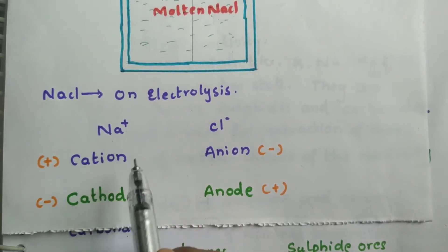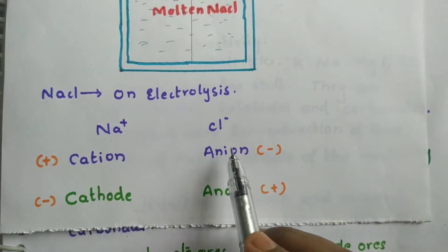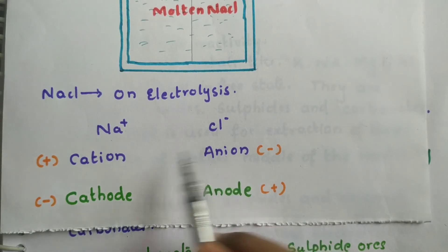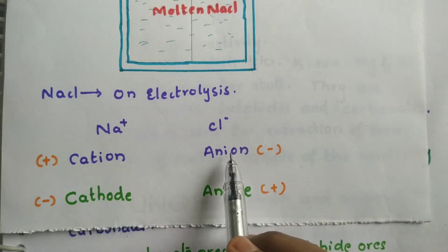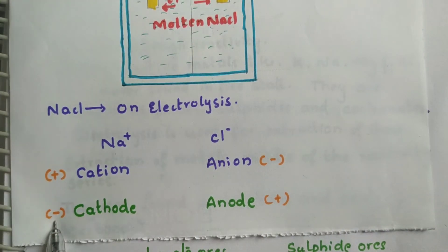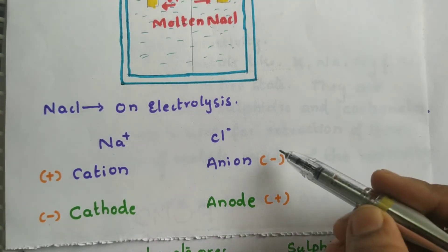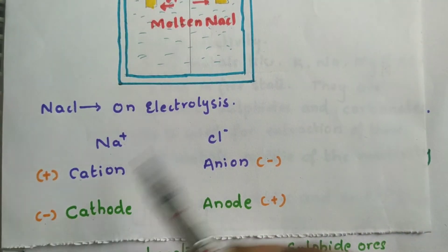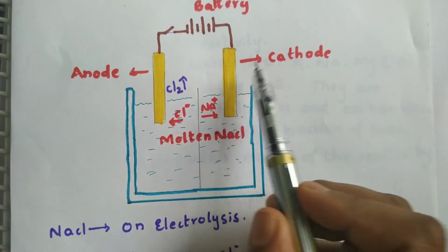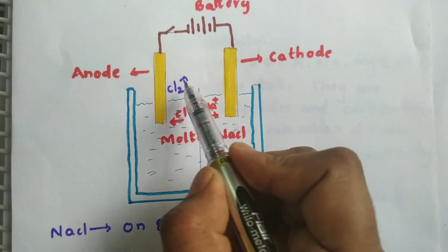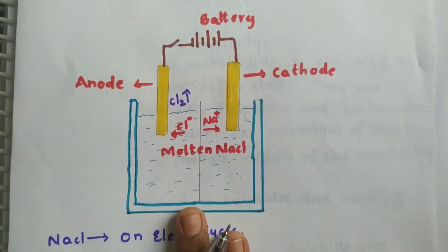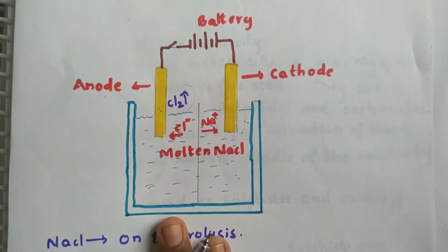Sodium (Na⁺) is a cation with a positive charge; chlorine (Cl⁻) is an anion with a negative charge. The cathode carries negative charge and the anode carries positive charge. Cations move towards the cathode and anions move towards the anode. So Na⁺ moves to the cathode and Cl⁻ moves to the anode — that is why chlorine gas is released near the anode.